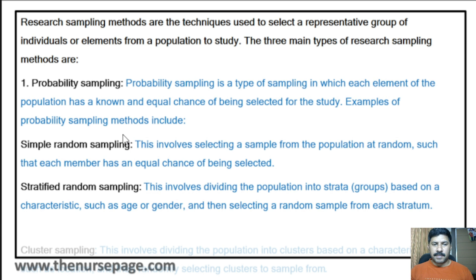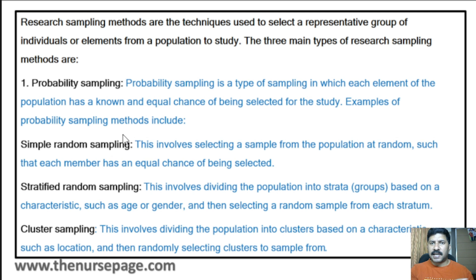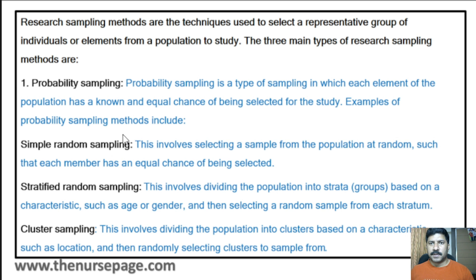Similarly, cluster sampling also categorizes. In cluster sampling, from each category one sample is selected and grouped together to make a cluster — for example, one red banana, one yellow banana, one blue banana. There will be five or ten clusters and then one cluster is randomly selected. In stratified random sampling, the researcher selects one sample from each stratum; in cluster sampling, the researcher selects one whole cluster. That is the difference between stratified and cluster sampling.